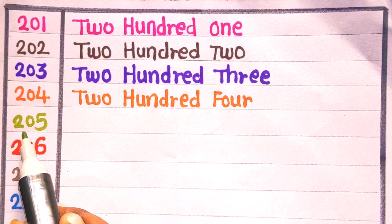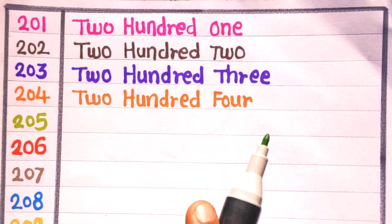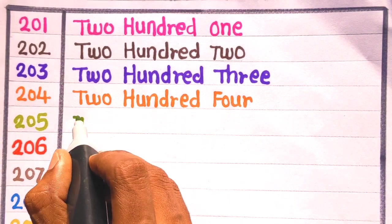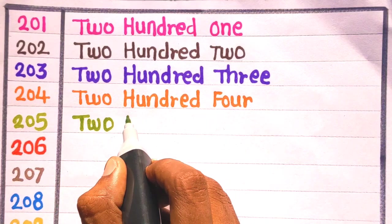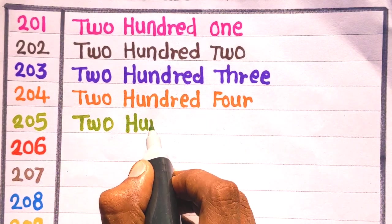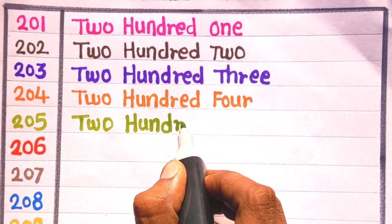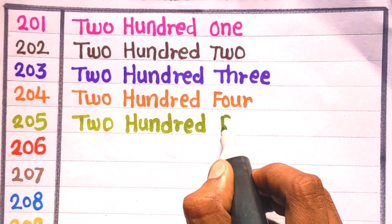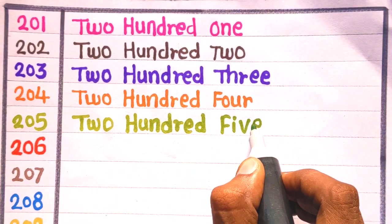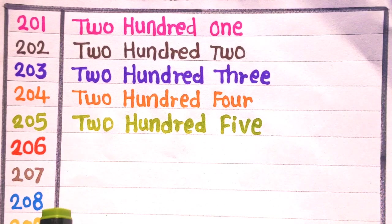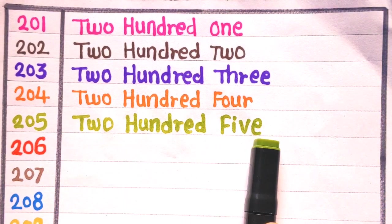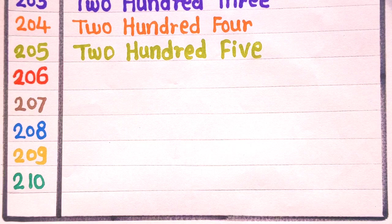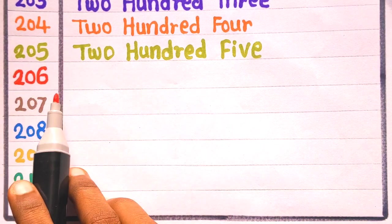Next is 205. E is 205. T, W, O, 2, H, U, N, D, R, E, D, 100, F, I, V, E, 5, 205. With the light green color.